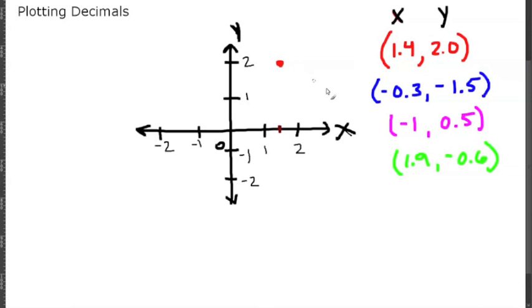Our next coordinate is the blue coordinate which is negative three-tenths and negative one and five-tenths or one and a half. So we're going to move in the negative x direction, so that's going to be to the left. This is going to be between 0 and 1, so it's going to go negative 0.1, negative 0.2, negative 0.3 will be right about here. And now we need to go negative 1.5, so 1 would be here, 1.5 is right in the middle. So this is where our blue coordinate is: negative 0.3 and negative 1.5.